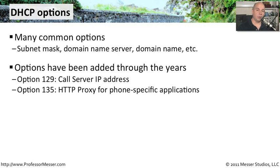Some very common ones for voice over IP networks are option 129, which can automatically configure the workstation so that it knows the call server IP address, or option 135, which automatically configures your voice over IP phone with the HTTP proxy for those phone-specific applications.